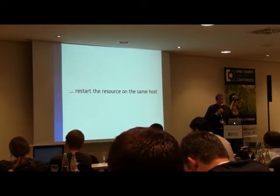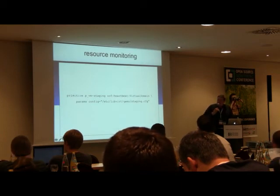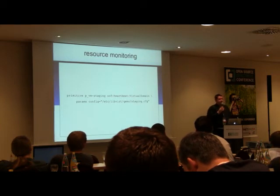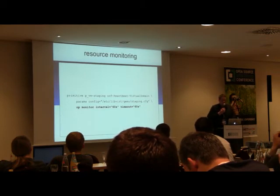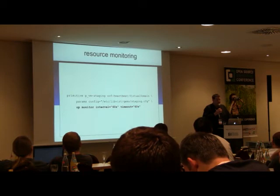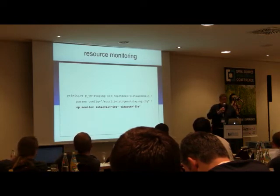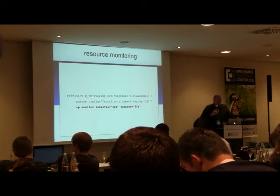Let's take a look at a very common use case for virtualization — libvirt virtual domains. If you want to do monitoring for a virtual machine, all you have to do is add the same op monitor line. In this case we use a larger interval of 60 seconds because we don't want to test our virtual domain too frequently, and a larger timeout because the reply might take longer under load. It's really the same thing for all resources — whatever primitive resource you have in pacemaker, you can simply enable monitoring by adding that line to the configuration.